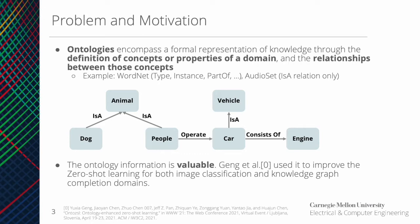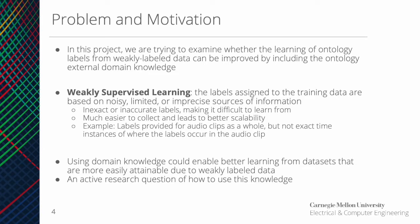Previous works have used ontology information to improve learning in image classification and knowledge graph completion domains. In our problem, we want to use ontology information to see whether it can improve the learning of ontology labels from weakly labeled data. In the weakly supervised learning scenario, labels are assigned based on noisy or imprecise sources of information, which makes it easier to collect data and leads to increased scalability. Studying this problem is important because using external knowledge could enable better learning from datasets that are more easily attainable. Previous works have looked at how to embed ontology information into models, but not solely in the context of weakly labeled data, so this is still an active research question.